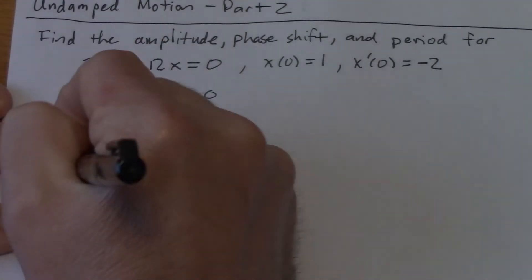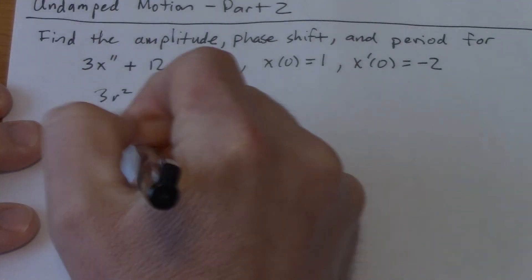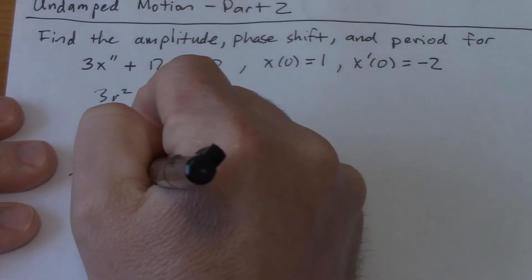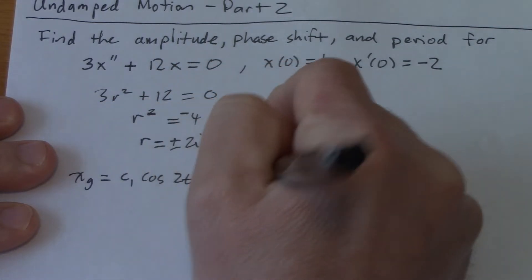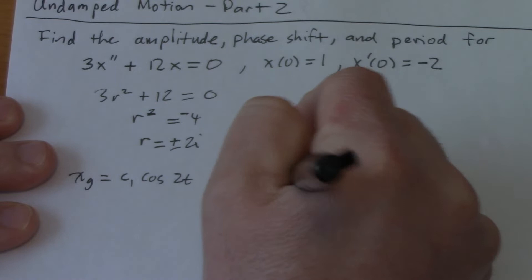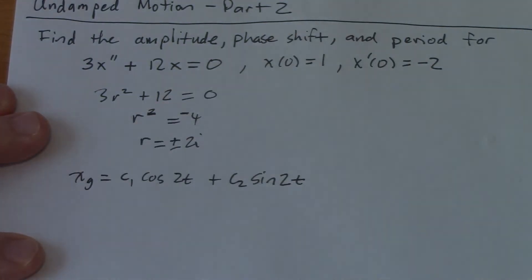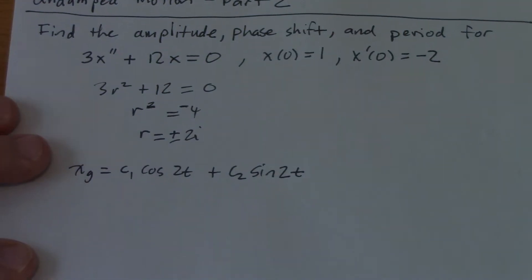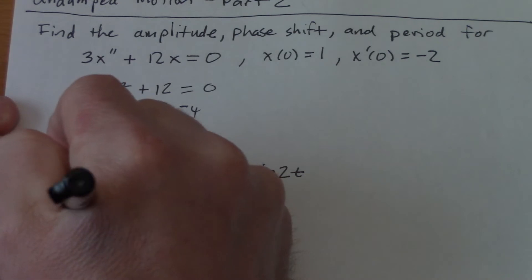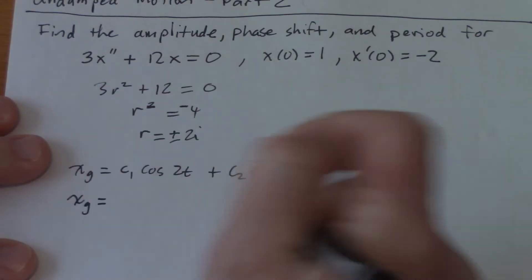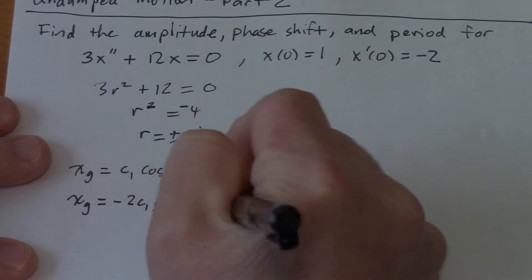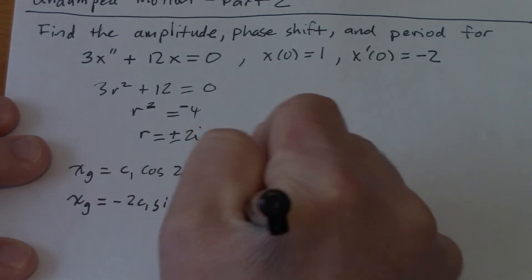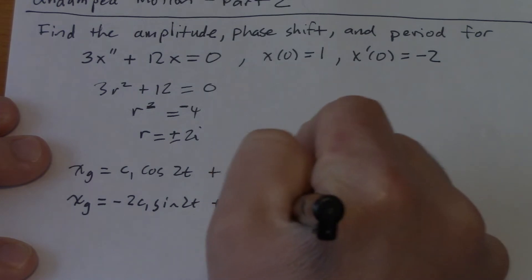So my homogeneous solution, general solution, is C1 cosine 2t plus C2 sine 2t. And we're going to go ahead and find C1 and C2 based on this.